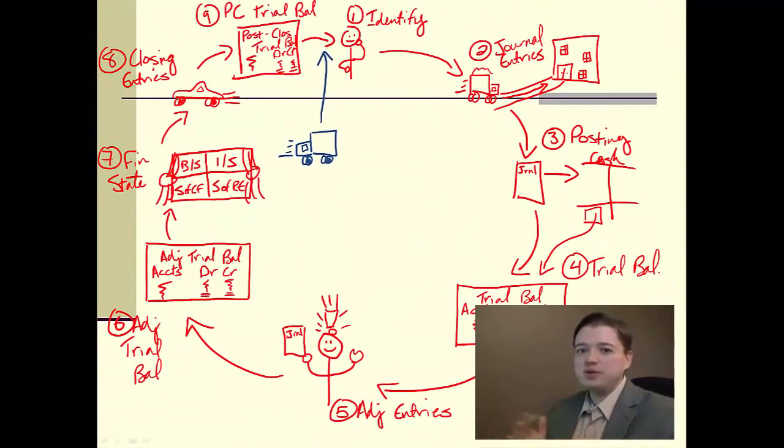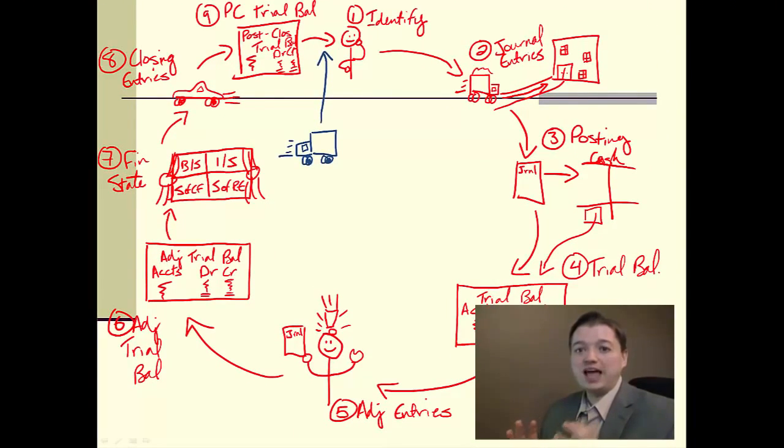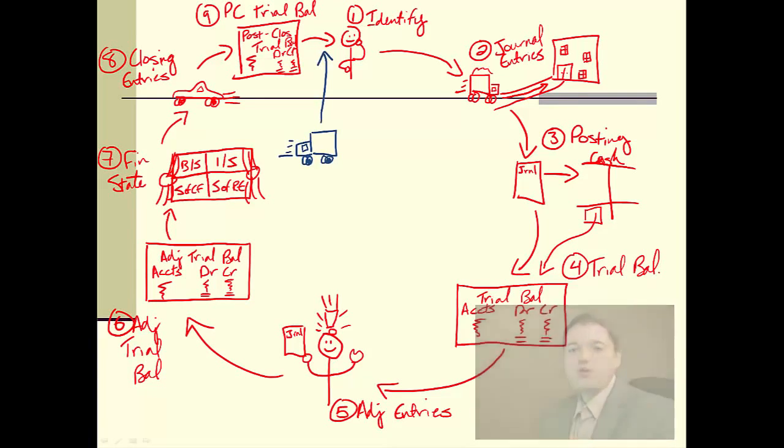Now, the accounting cycle has all these different pieces, and one of the key things we talked about last time was the fact that each piece flows from one to the other to create a circle that we just go through period after period and are able to keep track of what's going on.